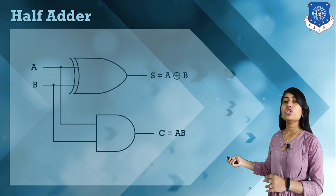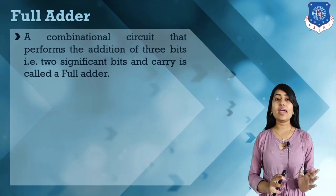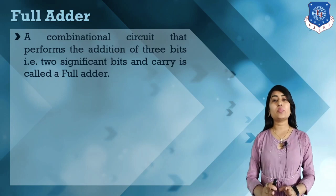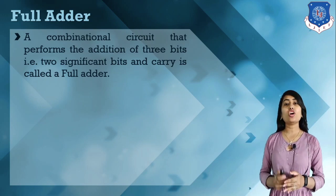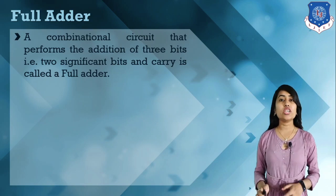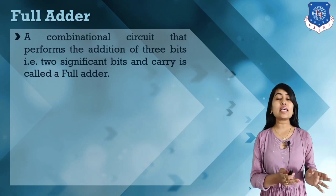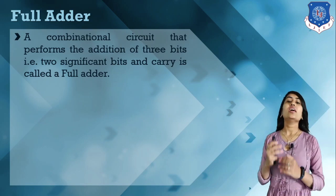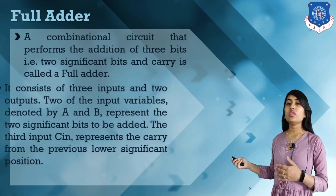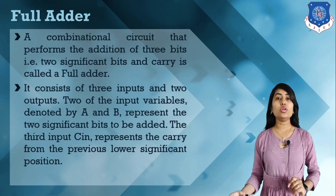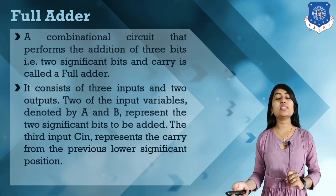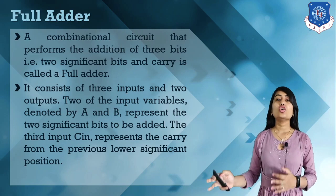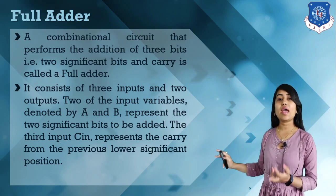Now, what is a full adder? A full adder is an adder which performs addition of three bits, out of which two bits are our input numbers and the third bit is basically the previous carry (C_in). So we have inputs A, B, and C_in, and two outputs: sum and output carry.